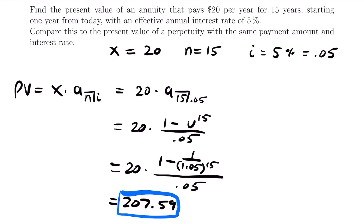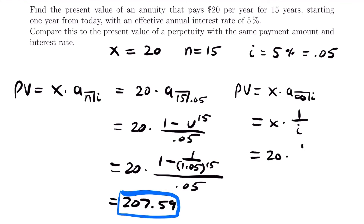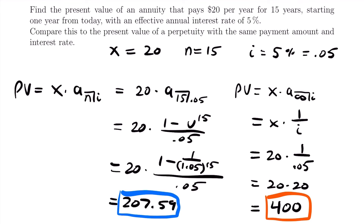Now let's find the present value of the perpetuity where these payments go on forever. The present value equals x times (1 divided by i), which equals 20 times (1 divided by 0.05). Since 1 divided by 0.05 equals 20, this gives us 20 times 20, which equals $400. You can see how much more you need to deposit for the payments to be infinite: $207.59 for 15 years versus $400 forever — almost double. And that's only $20 per year.